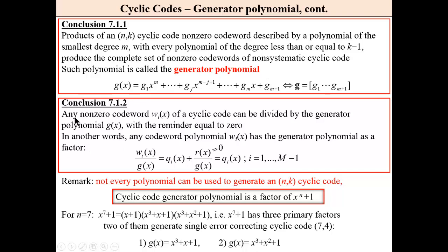Second conclusion. Any non-zero codeword of cyclic code can be divided by the generator polynomial with the remainder equal to zero. If we divide a polynomial corresponding to a codeword by the generator polynomial, then the remainder is zero.